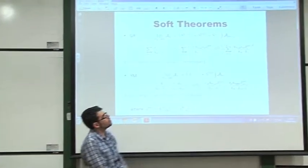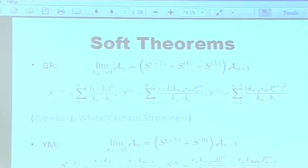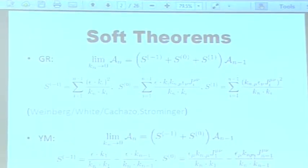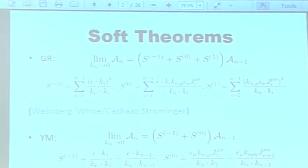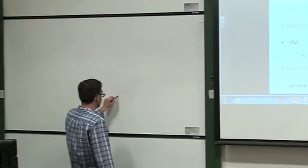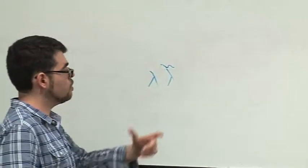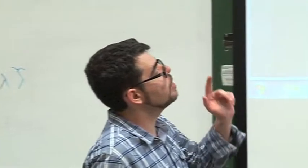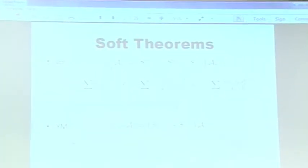Notably, Cachazo and Strominger computed the sub-sub-leading term S1. One can ask about higher order corrections; those are less well understood. But what one can say is that in the holomorphic soft limit — if you write momentum in four dimensions in bispinor form and implement the soft limit by taking one of these spinors to zero while holding the other fixed — the higher order terms are suppressed. The leading, sub-leading, and sub-sub-leading terms are singular, whereas higher order terms are finite. Furthermore, there is an analogous story for Yang-Mills theory: for a color-ordered Yang-Mills amplitude, if you take leg N (the gluon at position N) to zero energy, you get a leading soft term and a sub-leading soft term.